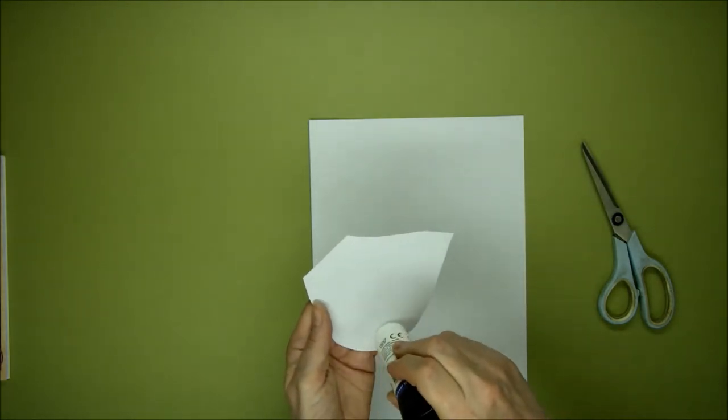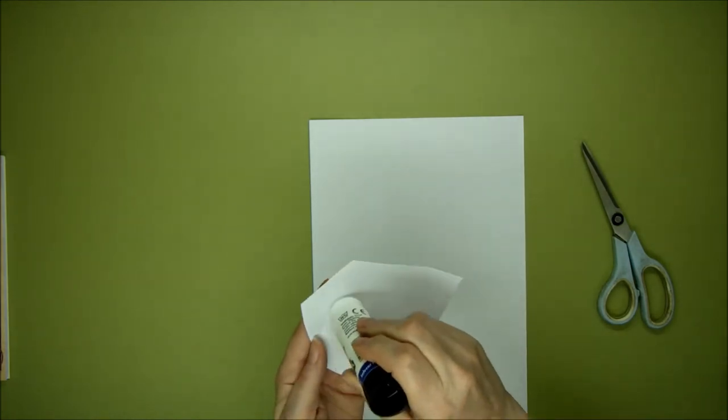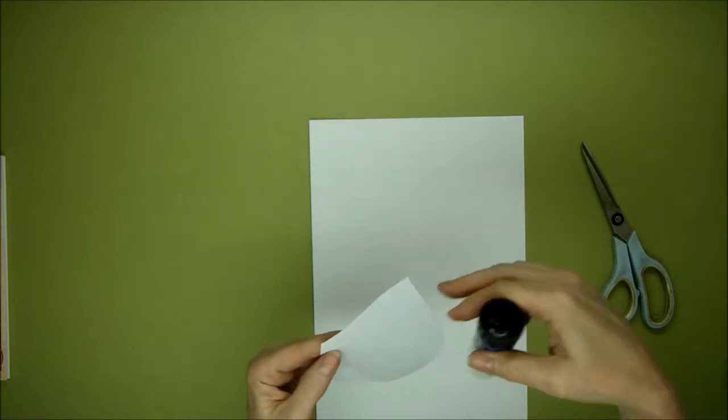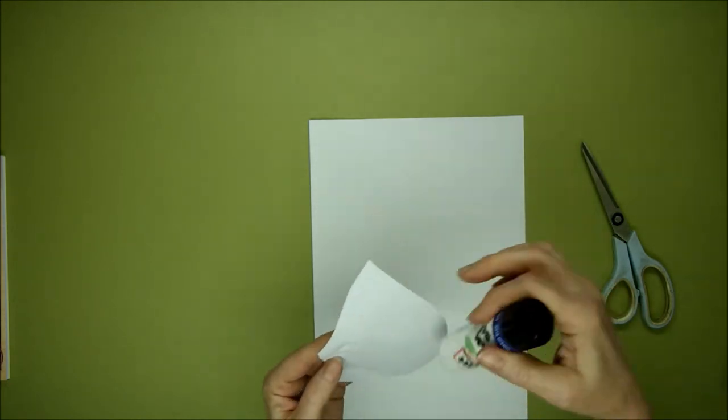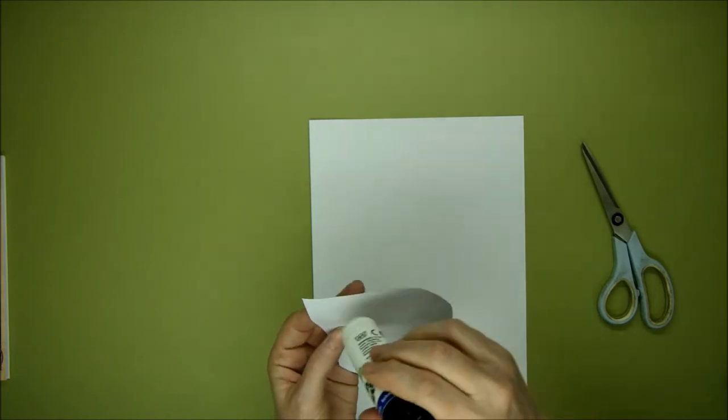Using a glue stick which isn't wet enough to buckle your pattern piece - these really are good. Make sure you go right to the edges and liberally cover it, and then we're going to place it onto a card.